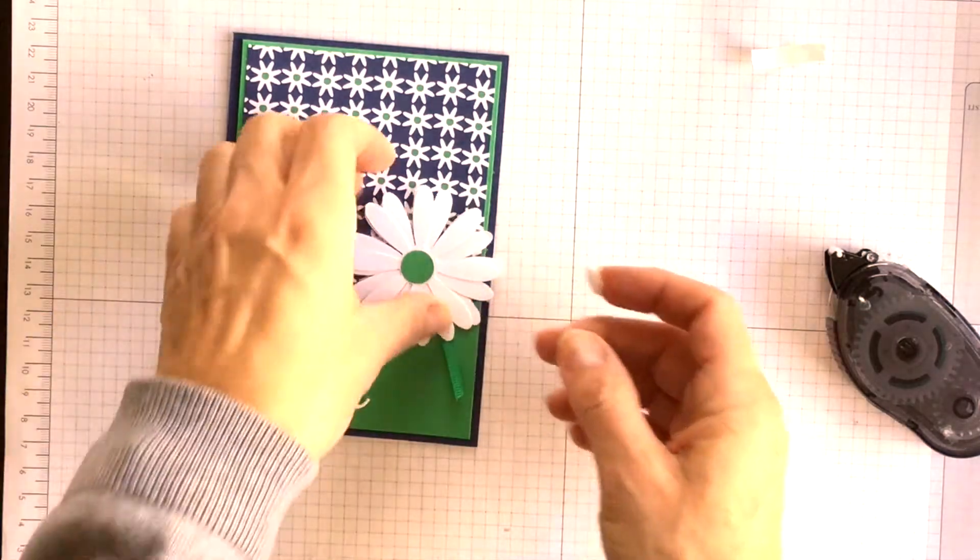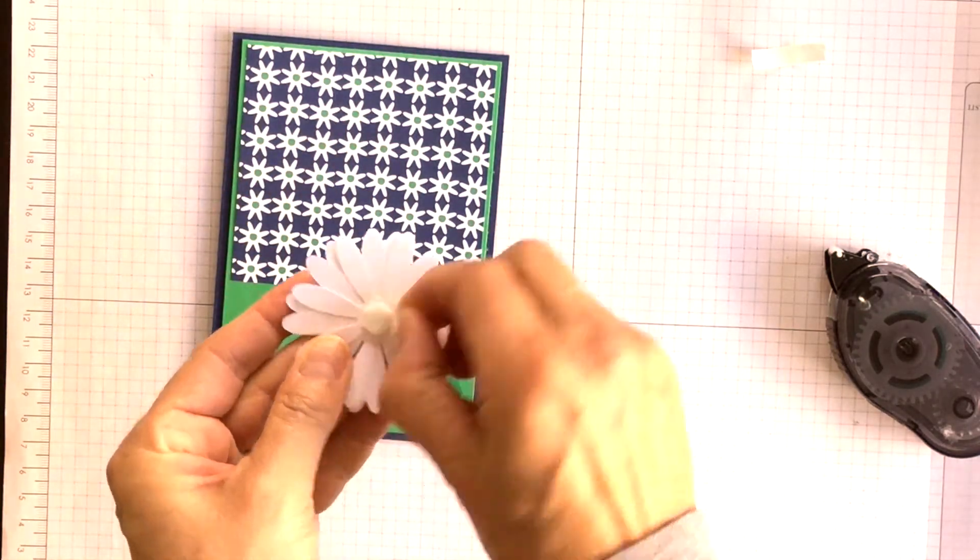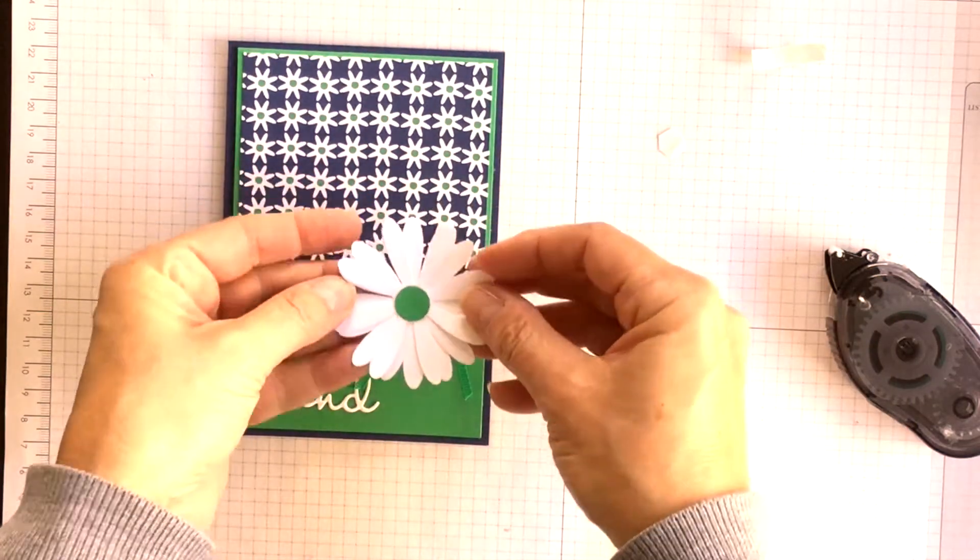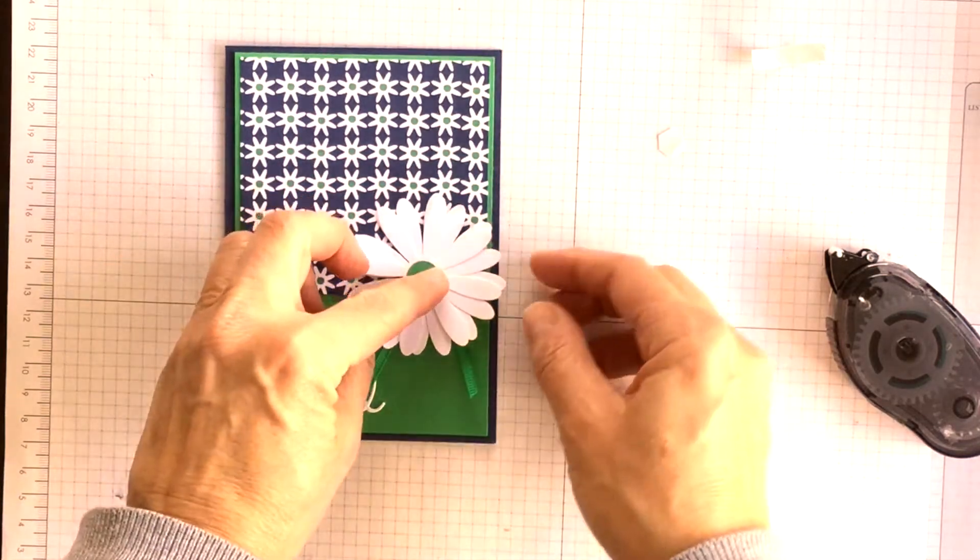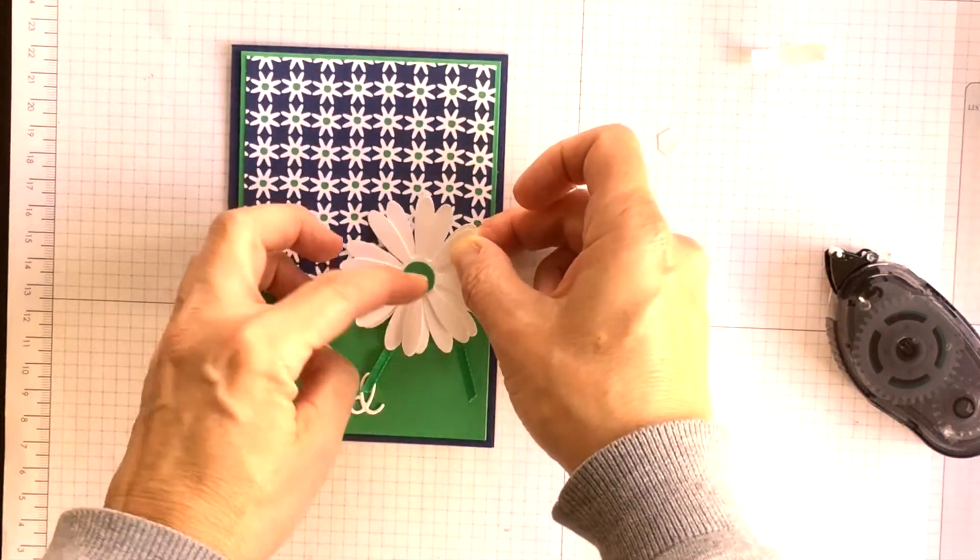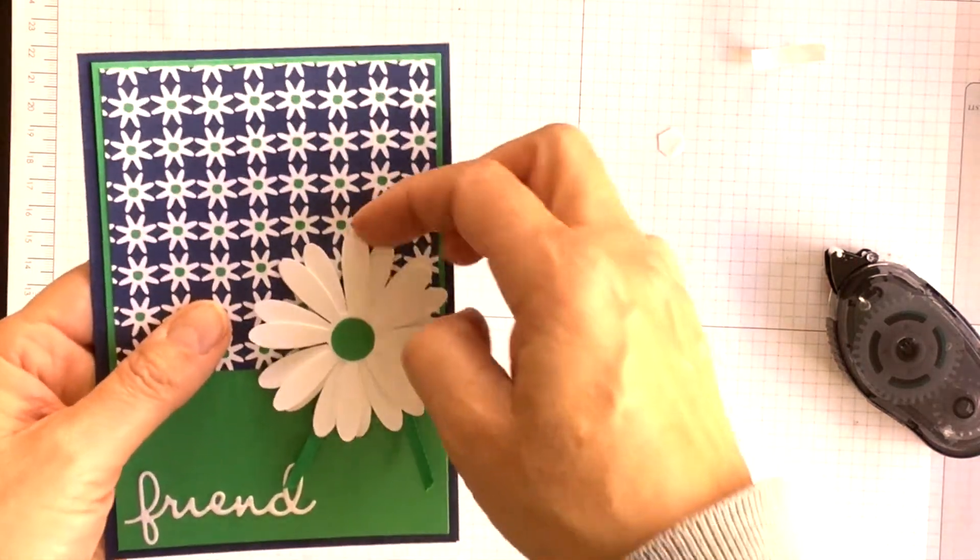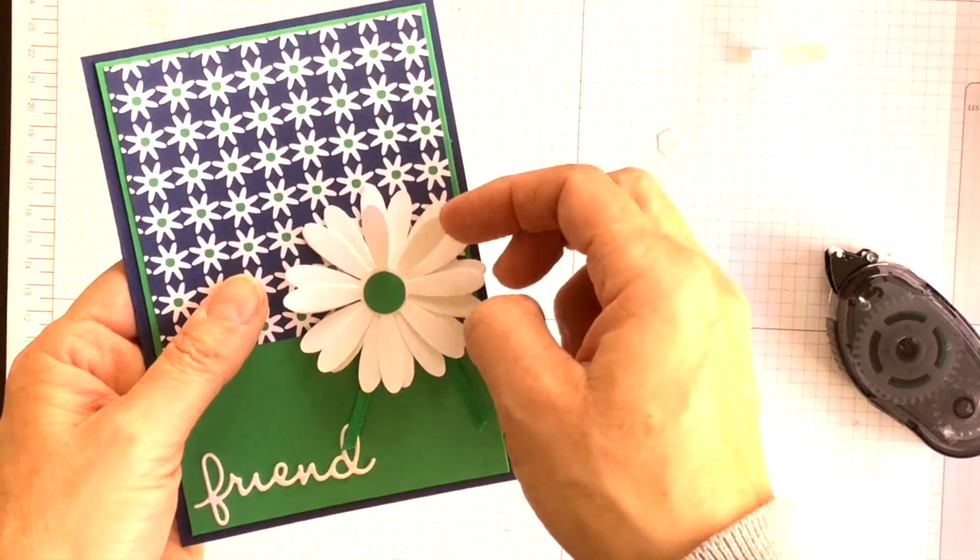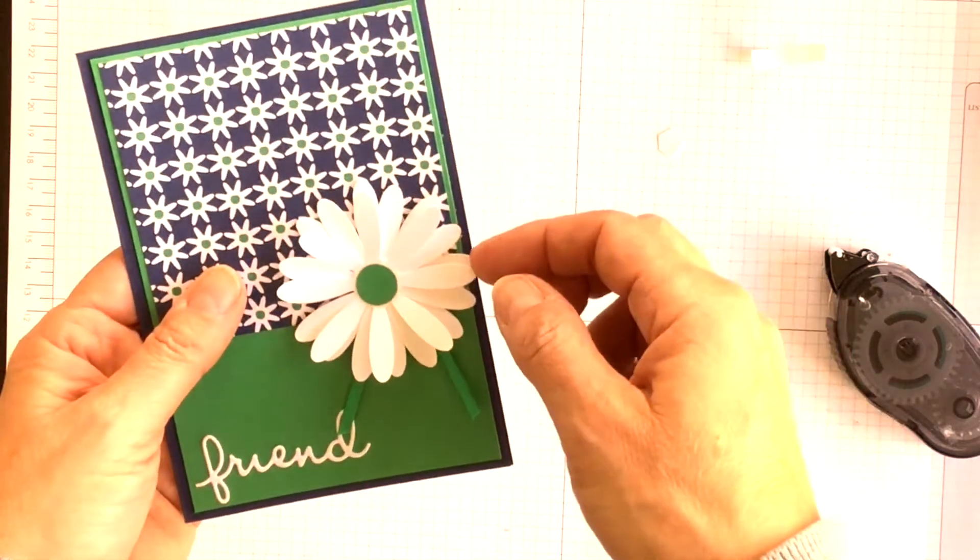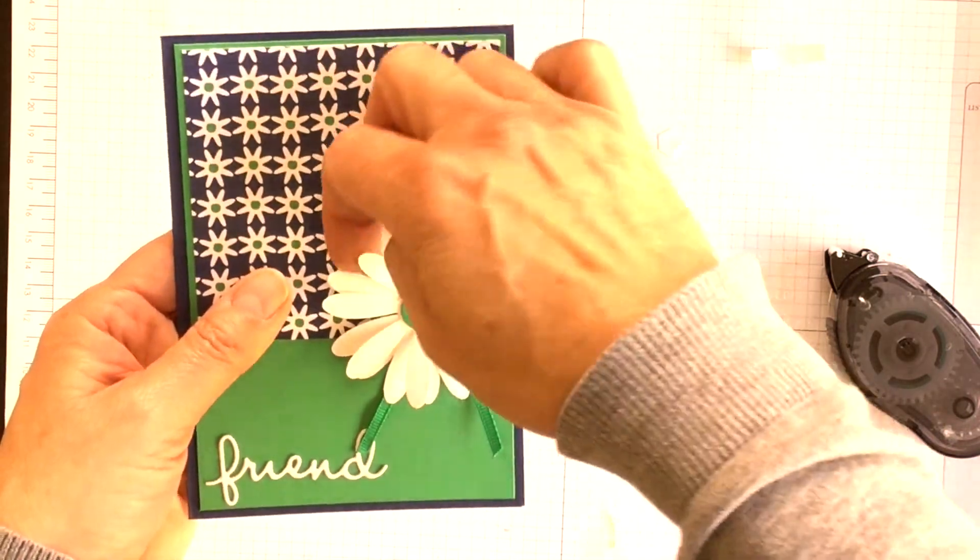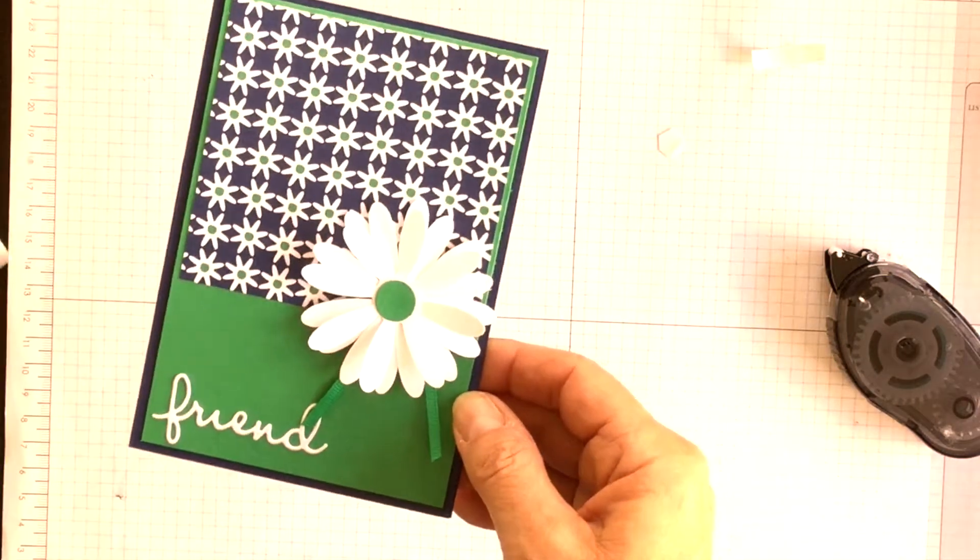I just turned around and got my supplies. I am going to pop up the daisy using one Stampin' Dimensional and I'm going to move it over just a little bit because I need room for my daisy to slide into my envelope. And there we go. Now what I would do is I would encourage the recipient to fold up the petals of the daisy once she gets my card so that it adds a lot of fun dimension.